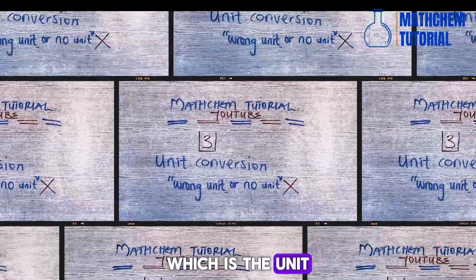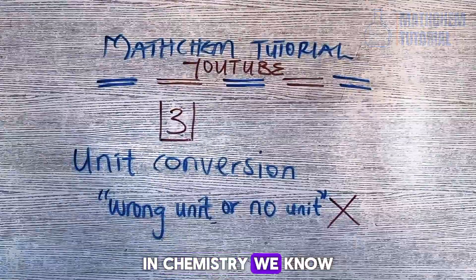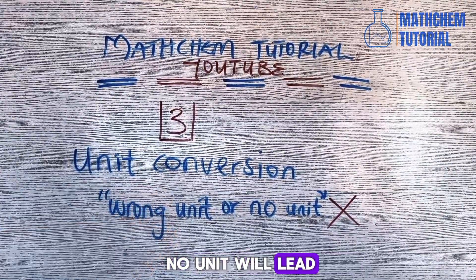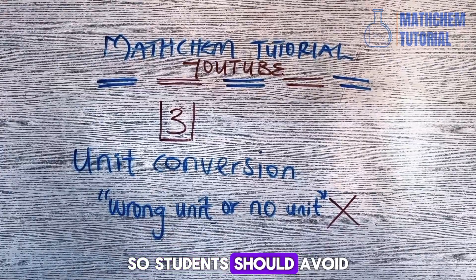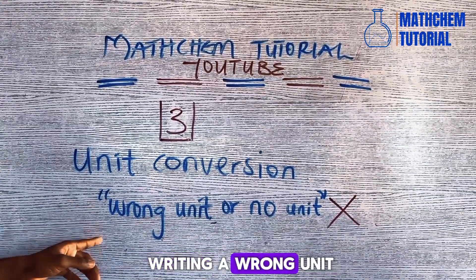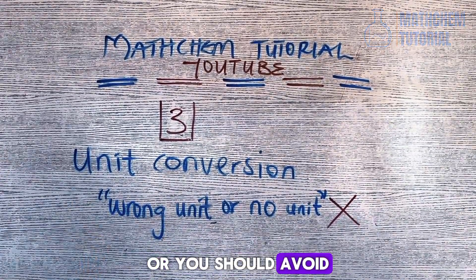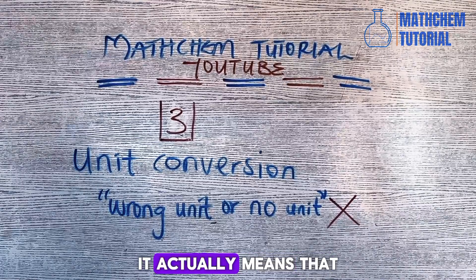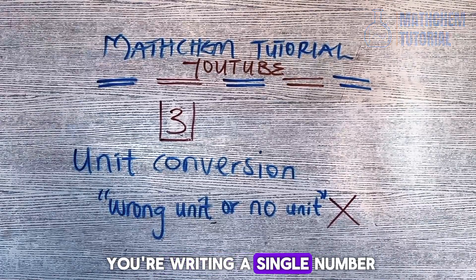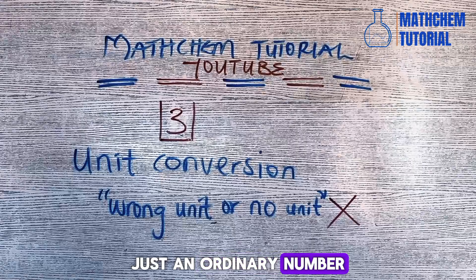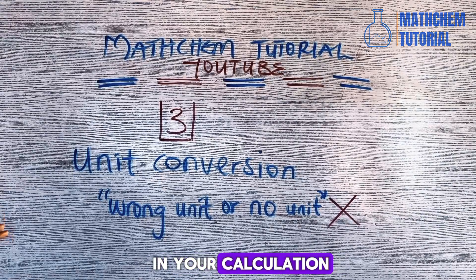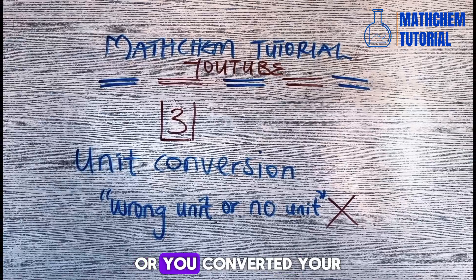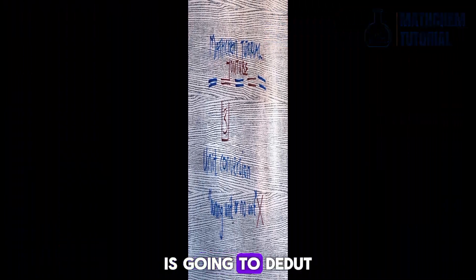Number three is unit conversion. In chemistry, units are very important. A wrong unit or no unit will lead to a zero score. Students should avoid writing a wrong unit or omitting units entirely, because a number without a unit is just an ordinary number. If you write a wrong unit or convert your units wrongly, it's going to deduct your mark.